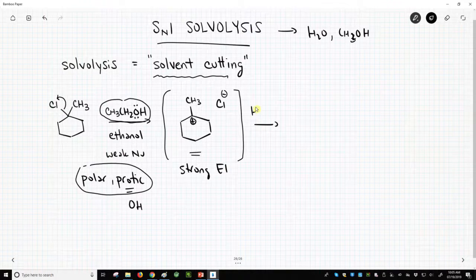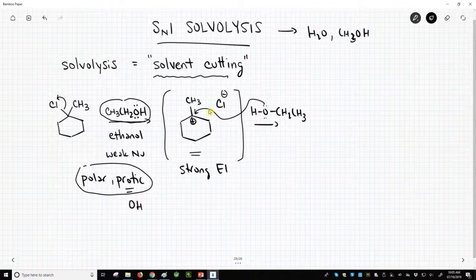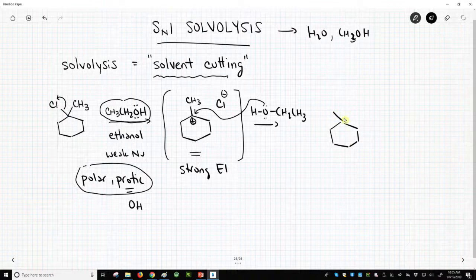It doesn't have a full octet, and what's going to happen is our ethanol, our weakly nucleophilic ethanol will attack that carbocation. We'll form a new carbon-oxygen bond. Now we've really completed our substitution.